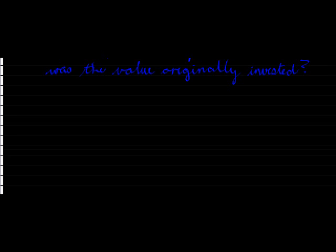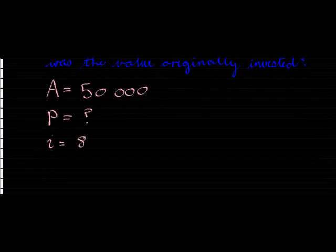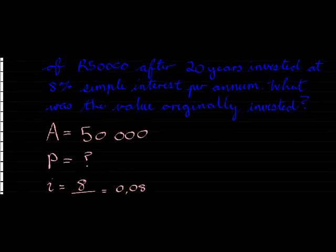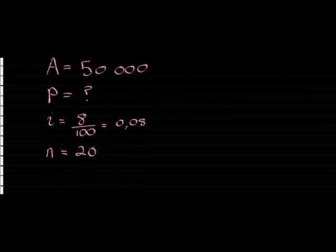Let's put down our information again. Do I have my amortized value, my future value? Indeed I do: fifty thousand. Do I have my principal value? Unfortunately no, that is what is asked. Do I know what interest I'm earning every time? Yes, eight percent. Eight percent means eight divided by a hundred, or move the comma left two spaces: zero comma zero eight. And the number of times we get interest, we get interest yearly, and we got it over twenty years, so the number of times I got interest was twenty times.